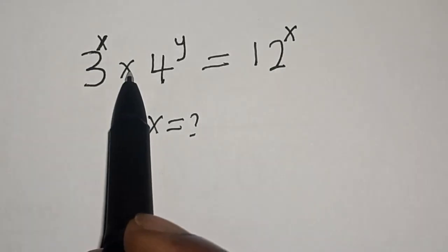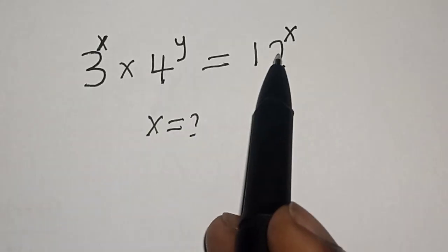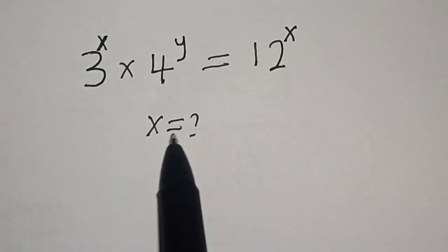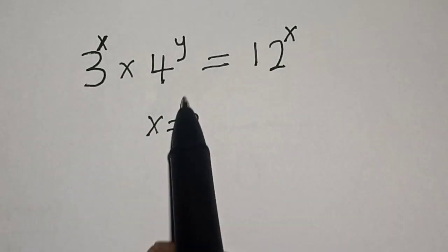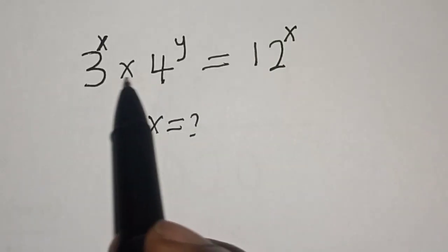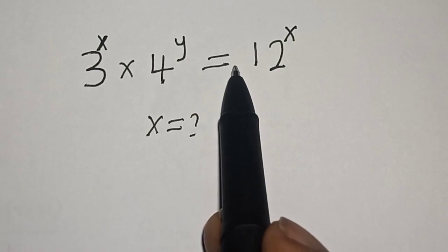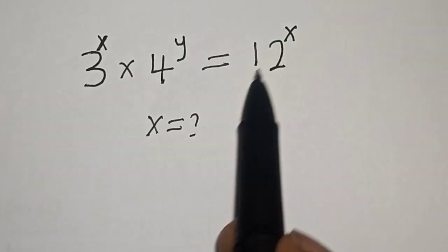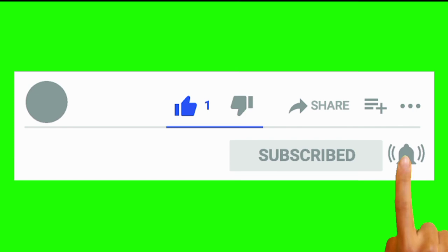3 raised to power s multiplied by 4 raised to power y is equal to 12 raised to power s. What is the value of s? Hi everyone, welcome to my class. In this class we want to find the value of s from this given equation. But before we proceed, please don't forget to like, share, comment and subscribe.